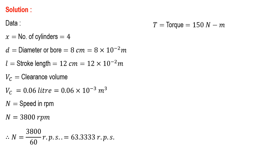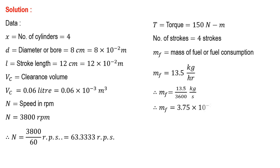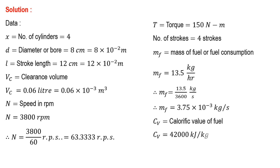Torque is 150 Nm. Number of strokes is 4. Fuel consumption is 13.5 kg per hour, converted to kg per second: 13.5 divided by 3600 equals 3.75 into 10 to the minus 3 kg per second. Calorific value of fuel is 42,000 kJ per kg. Gamma is 1.4 for air.